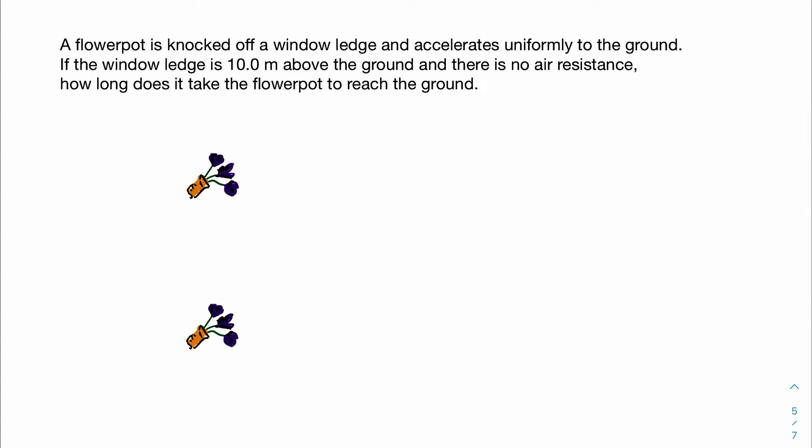First step is visualizing it. The second step we want to set up a coordinate system. In other words, we want to define where a zero position is going to be our origin. Usually the best place to put it is at the ground level. So let's define the ground level to be our origin, and that means that the flower pot started 10 meters above the ground level.